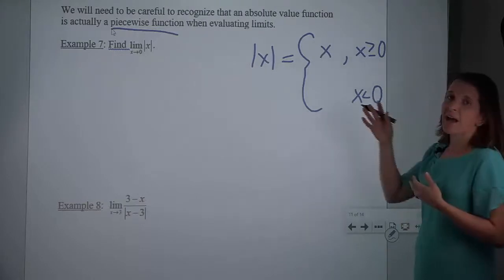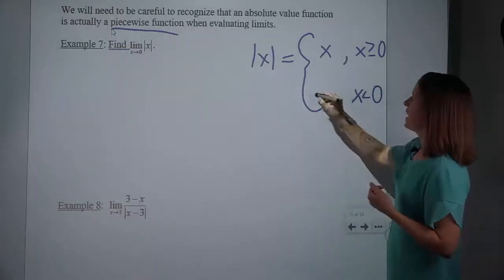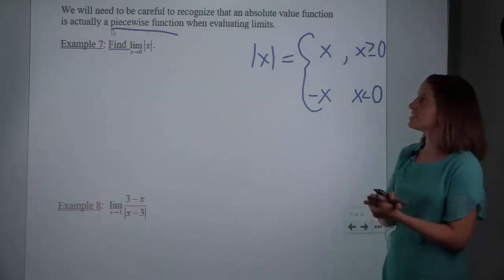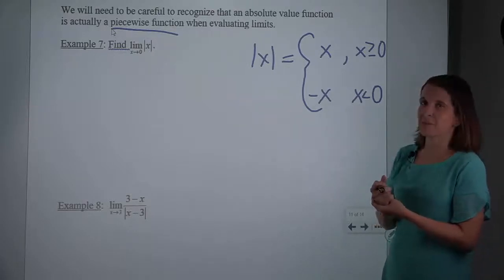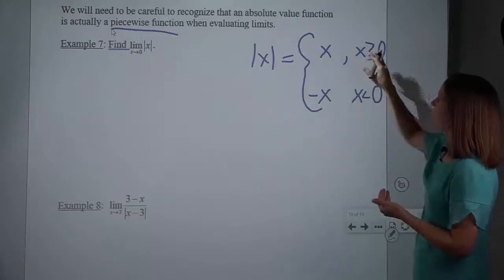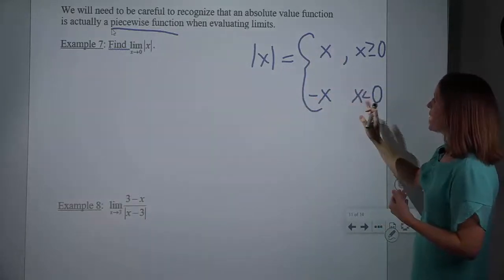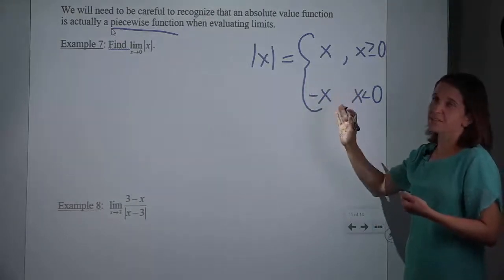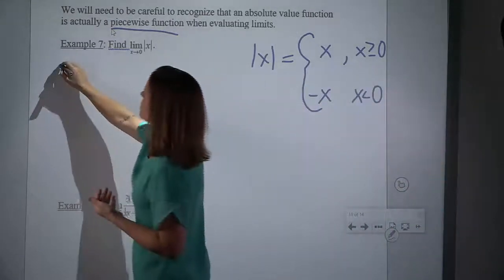So that might look more complicated than just saying it makes things positive, but that really shows the two cases. If x is positive or 0, then the absolute value is whatever you put into it. But if you plug a negative number into an absolute value, then you're getting out the opposite — a positive version of that number. We need to know this so that we can check from the left and from the right. So if we're checking the limit from the left, for the absolute value of x, we have to decide which piece we're using.